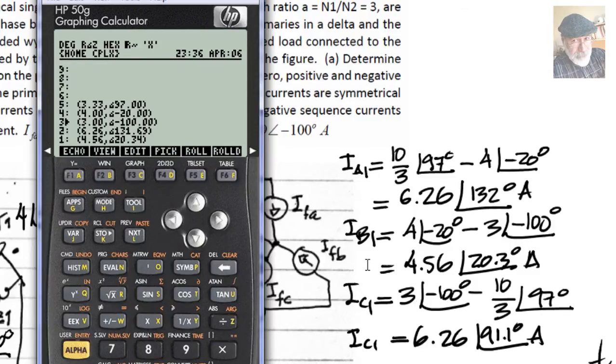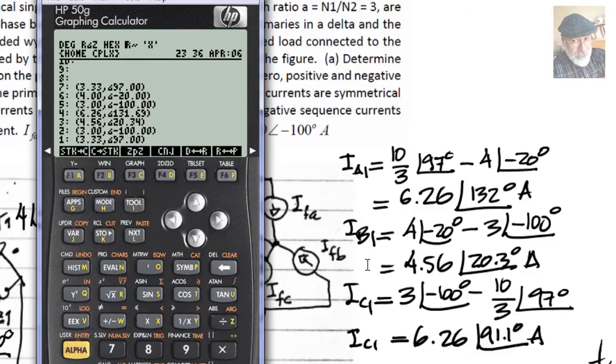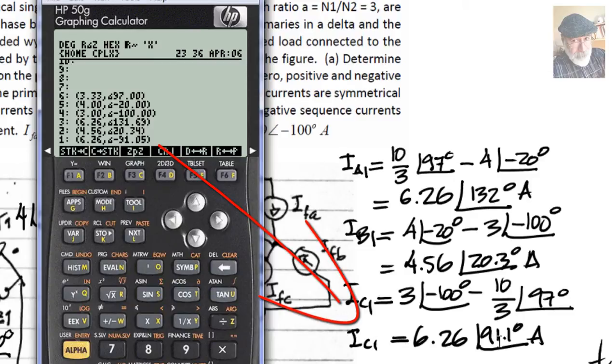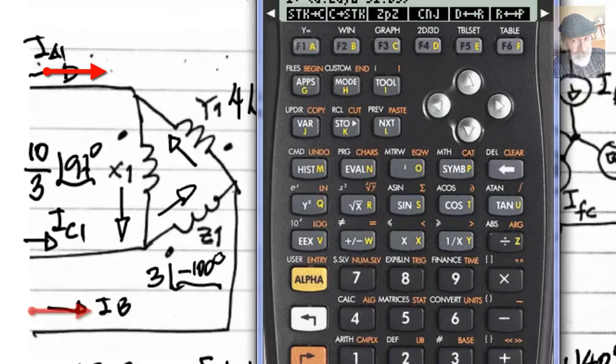And the third one is 3 minus 10 thirds. Oh, sure. Pick this one and pick this one, and then subtract them, and that is the current 6.26 with an angle of 91.1 degrees. Those are the three currents in the lines A, A1, B1, and C1.